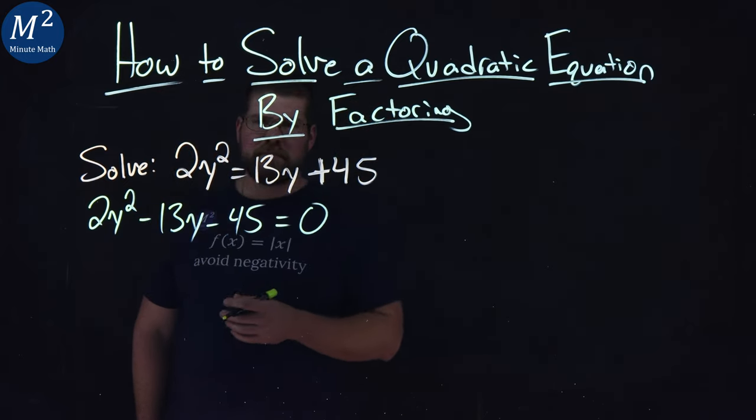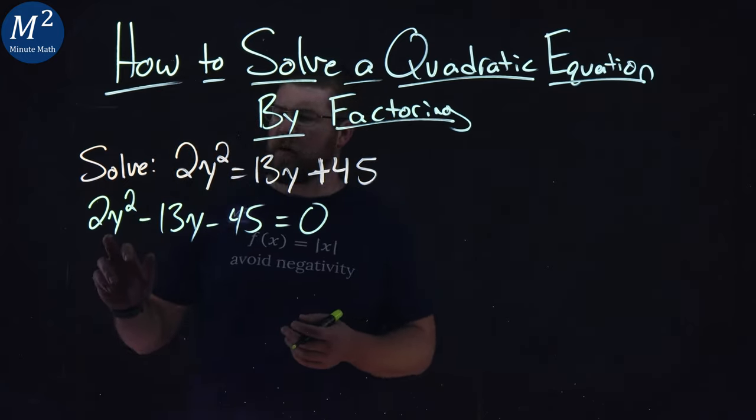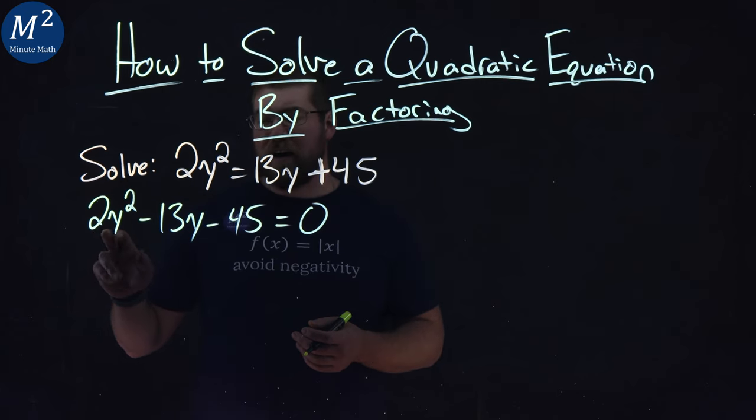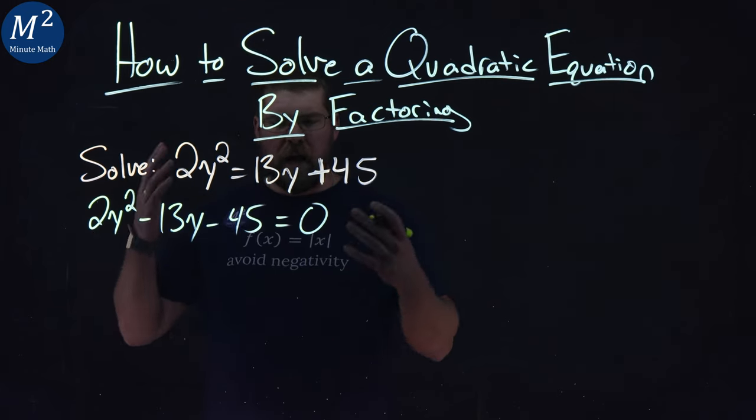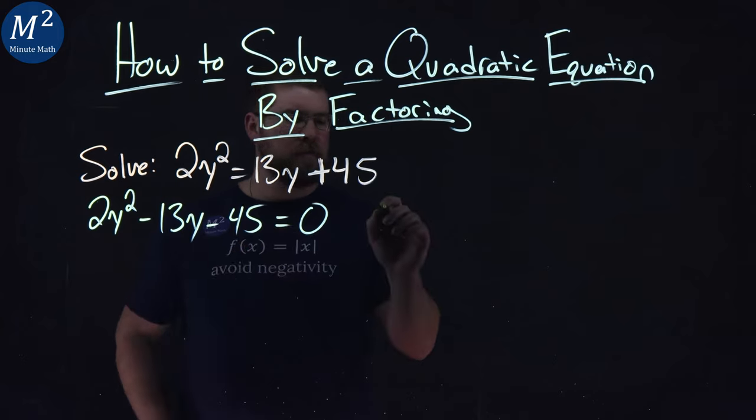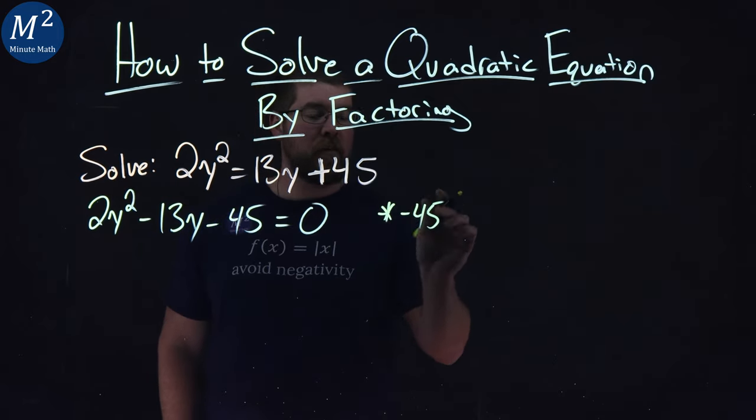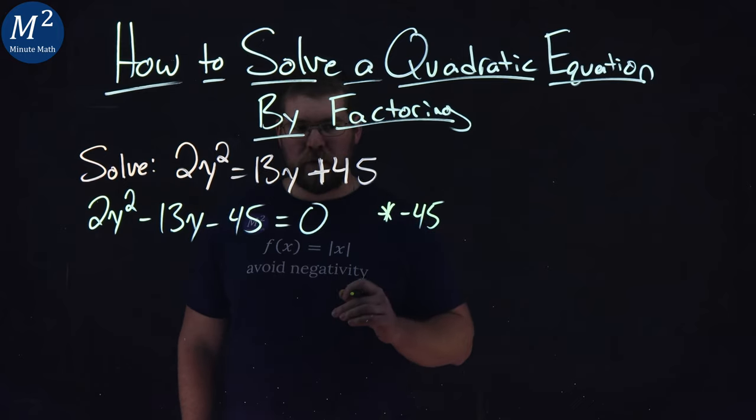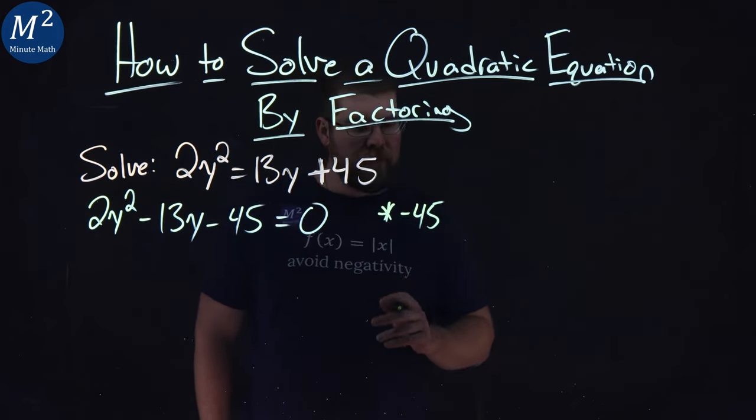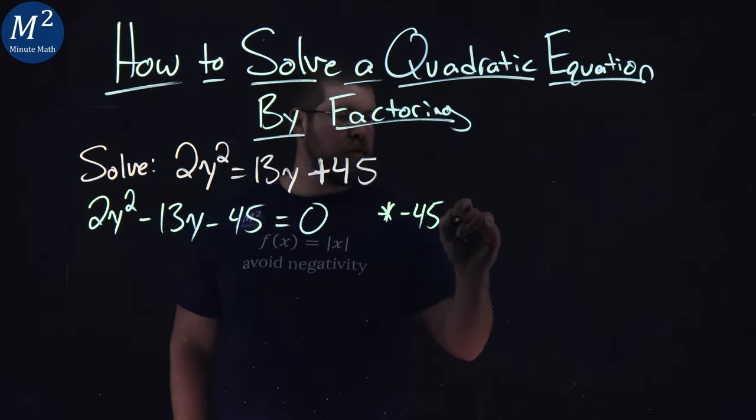Now it becomes a little difficult, especially with a coefficient here, an a value of 2. I want to ask myself: what two numbers multiply to be negative 45? So one's going to be positive, one's negative. But when I add them...